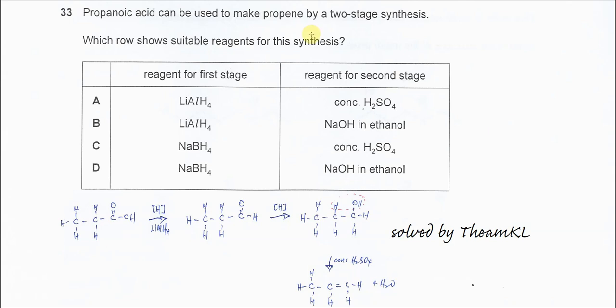Question 33. Propanoic acid can be used to make propene by two-stage synthesis. First we need to reduce the propanoic acid. Let the propanoic acid form the alcohol first.